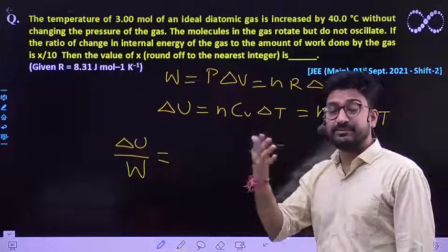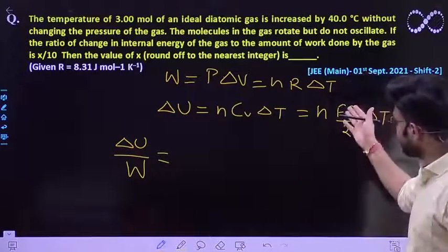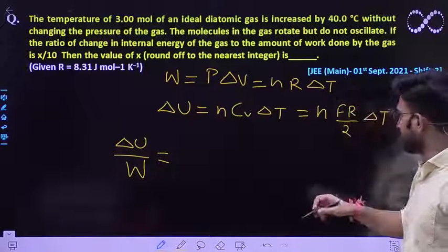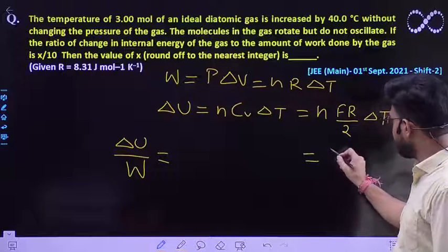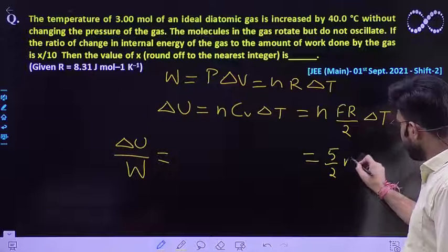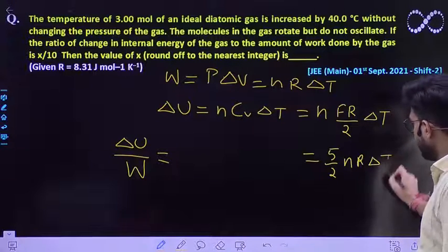And what is degree of freedom of the diatomic gas? Diatomic gas has a degree of freedom of 5. So it can easily be written as 5 by 2 nR delta T.